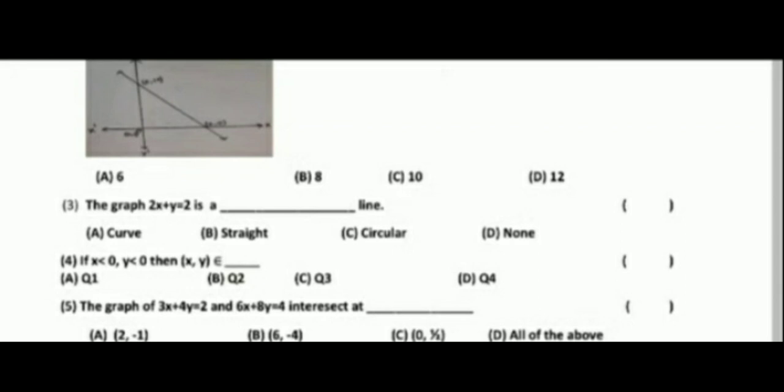Fourth. If x less than 0, y less than 0, then the point (x, y) is in the third quadrant. Answer is option C.